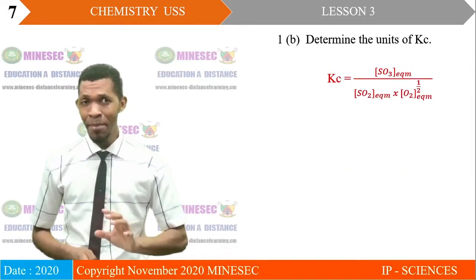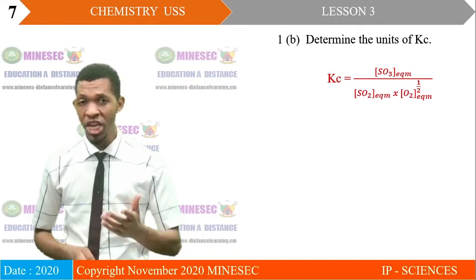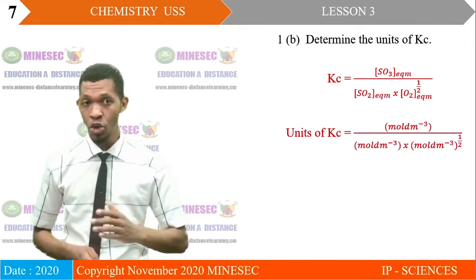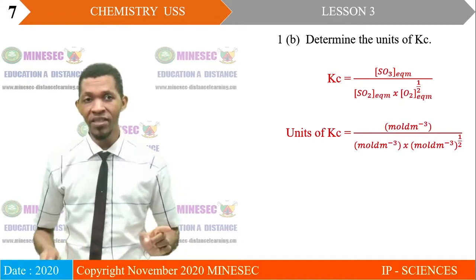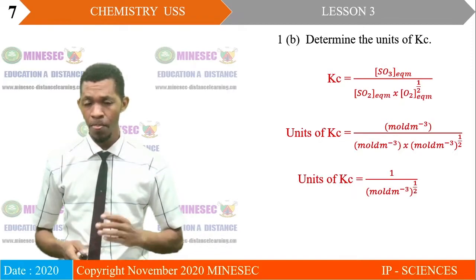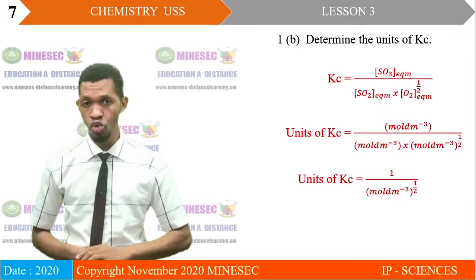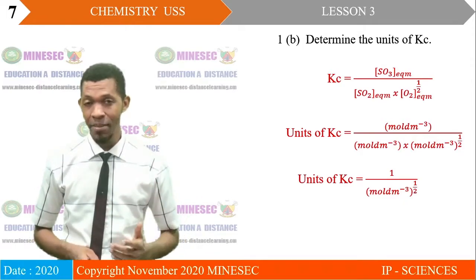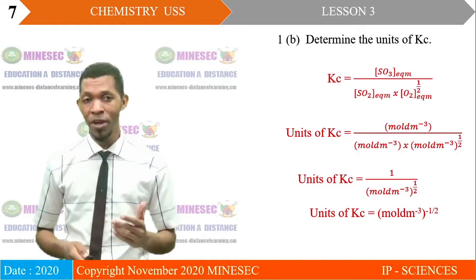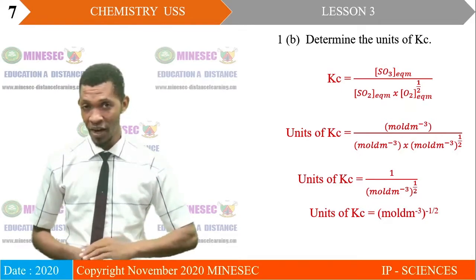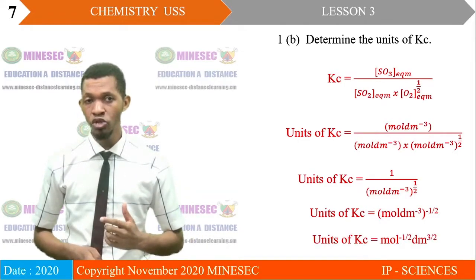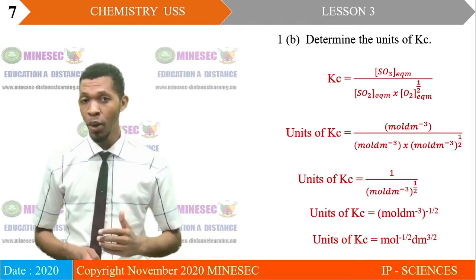Part B: determine the units of Kc. Substituting molar concentrations with their units, we have: unit of Kc = (mol dm⁻³) / ((mol dm⁻³) × (mol dm⁻³)^(1/2)). Simplifying, unit of Kc = 1 / (mol dm⁻³)^(1/2) = (mol dm⁻³)^(−1/2). Applying laws of indices, unit of Kc = mol^(−1/2) dm^(3/2).